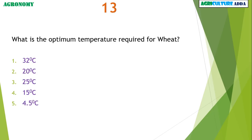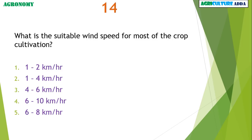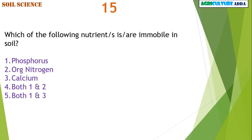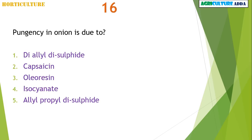What is the ESP of saline alkali soil? More than 15. What is the optimum temperature required for wheat? 20 degrees Celsius. What is the suitable wind speed for most crop cultivation? 4 to 6 km per hour.